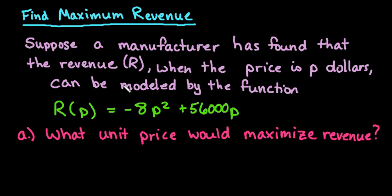Hi, for this video I'm going to show you how to find the maximum revenue. Suppose a manufacturer has found that the revenue R, when the price is P dollars, can be modeled by the function R of P equals negative 8 P squared plus 56,000 P.